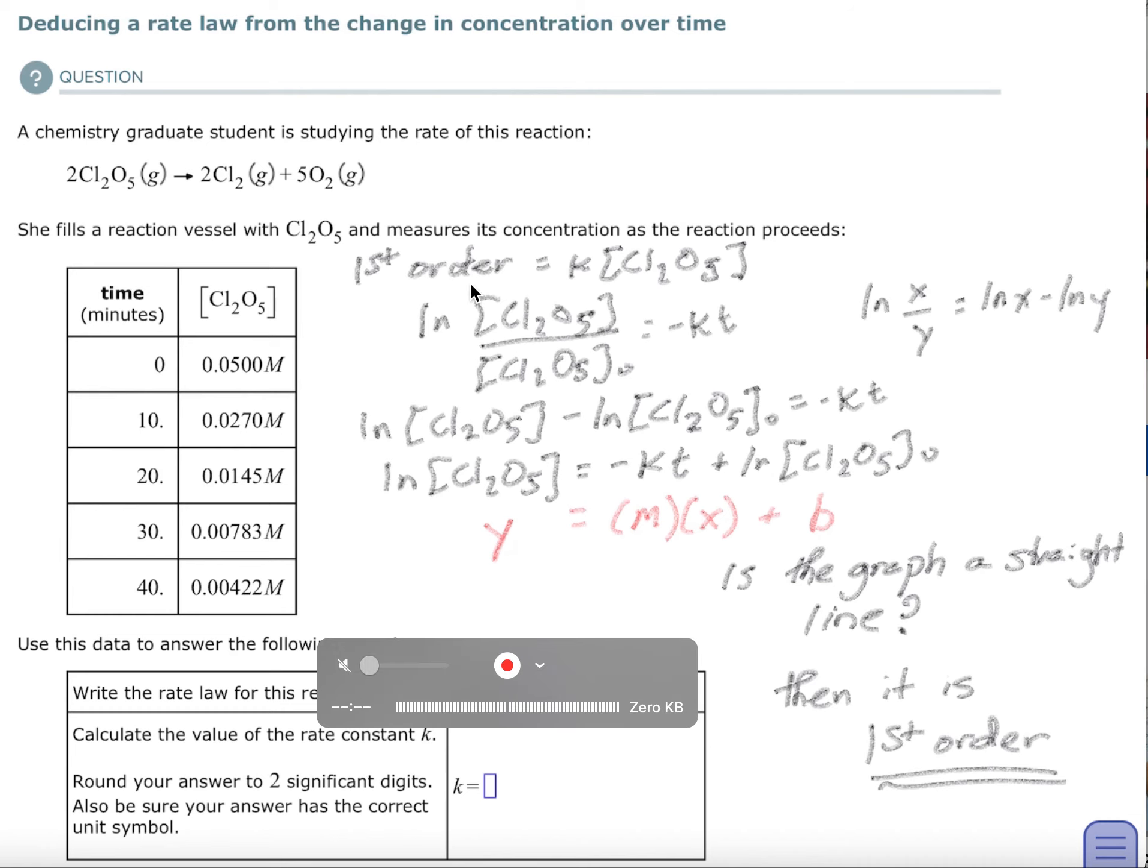So in order to get this integrated rate law into a y equals mx plus b, we take the natural log of x over y equals natural log of x minus natural log of y, and I rewrote it. Natural log of the molarity of Cl2O5 minus the natural log of the original equals minus kt. When I brought it over, I end up with y, that's the natural log of your current molarity, equals your m would be your negative k, your t is your x, and your natural log of your original is your b.